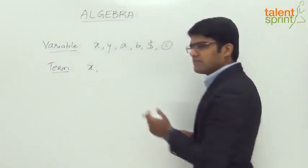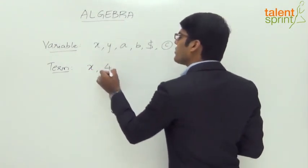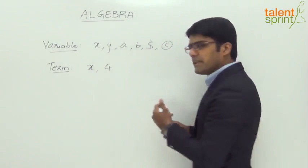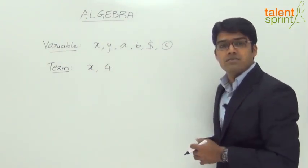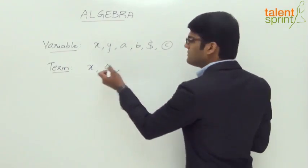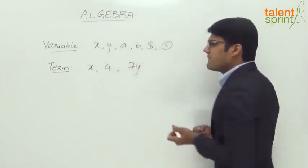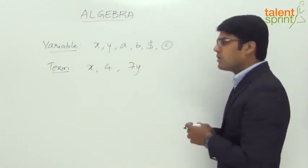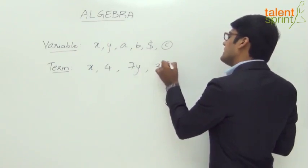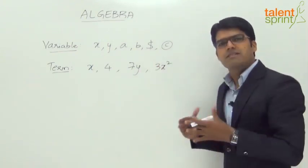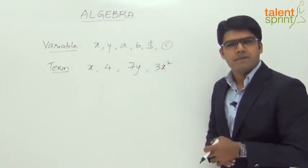For example, X is a term. Or for that matter, any number — let's say 4; 4 is also a term. In a given expression when we have different variables and constants used, or it can be a combination of both. For example, 7y is a term, or let us say 3x squared — that is also one of the terms. So a term is a variable or a number used in a given expression.